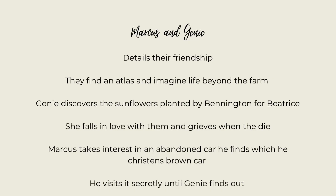The next chapter details Marcus and Jeannie's relationship. They find an atlas and imagine life beyond the farm and how they would explore together. Jeannie discovers the sunflowers planted by Bennington for Beatrice, and she begins to fall in love with them, even grieving when they die. Marcus does not share the same interest — instead, he takes interest in an abandoned car, which he christens Brown Car, and begins to visit it secretly until Jeannie finds out.